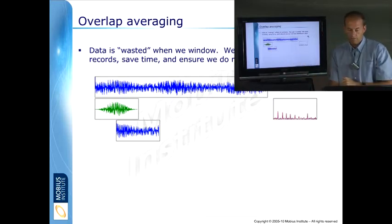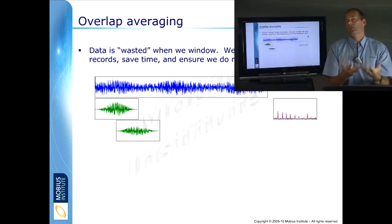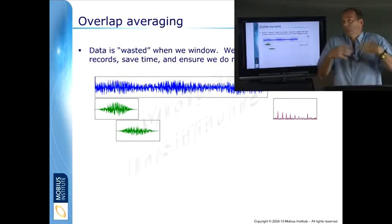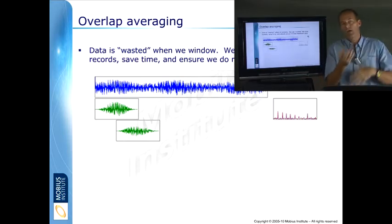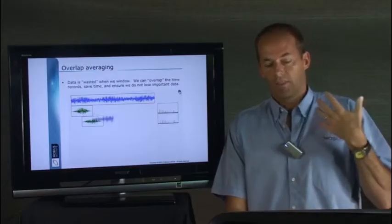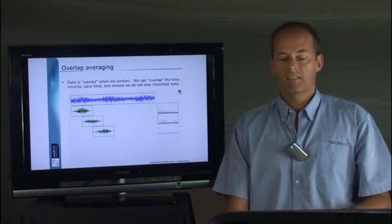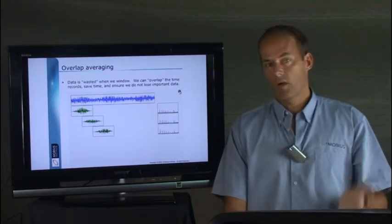So when we do the averaging, sorry, do the window process, this vibration that was wasted is now being used. So that vibration that may have told part of the story with an impact or some modulation, some beating, whatever, is now being used. So the number one good thing about overlap averaging is it does not waste the vibration.